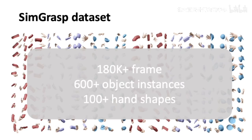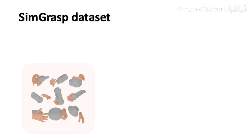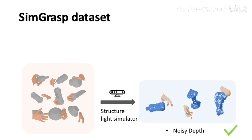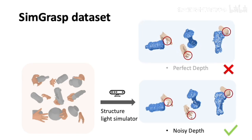In total, SimGrasp is composed of more than 180,000 frames, 600 object instances, and 100 hand shapes. We implement a structure-light-based depth sensor simulator to generate realistic depths. Compared to perfect depths, our simulator can capture realistic noises and artifacts that exist in real-world point clouds, and thus significantly minimize the Sim-to-real gap.